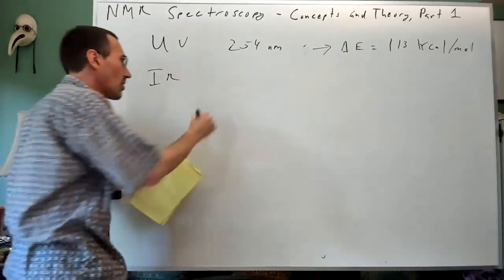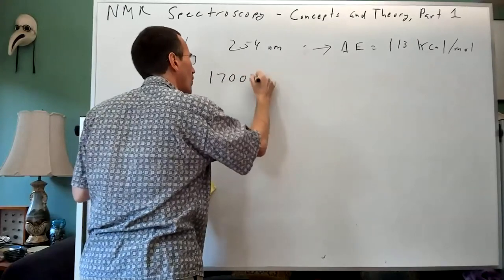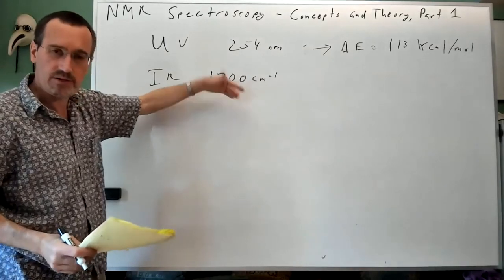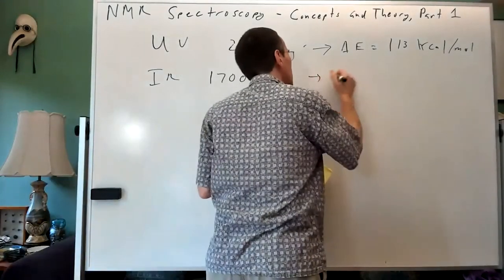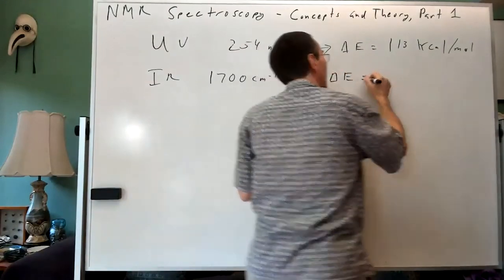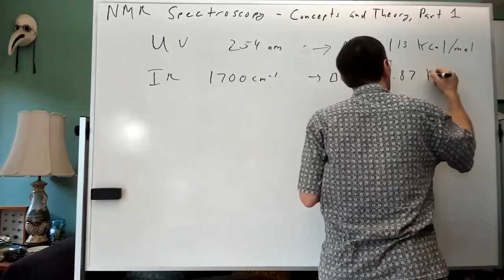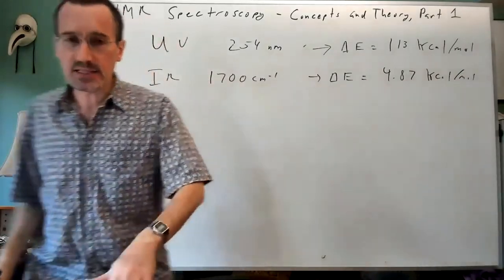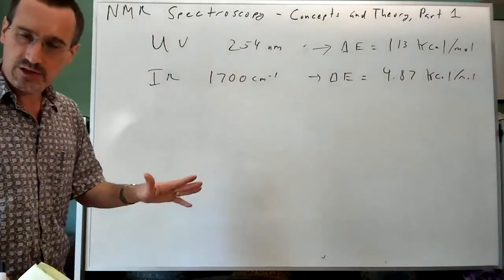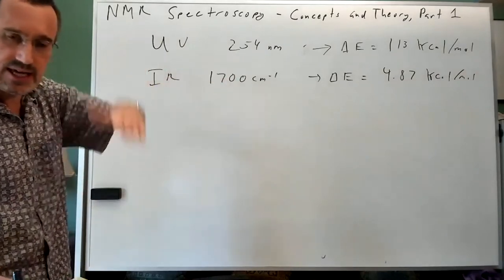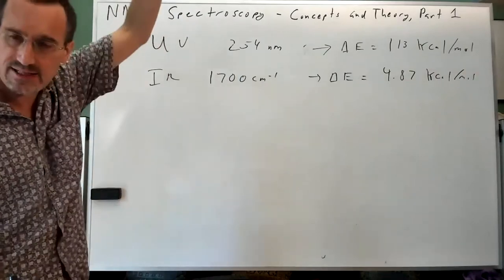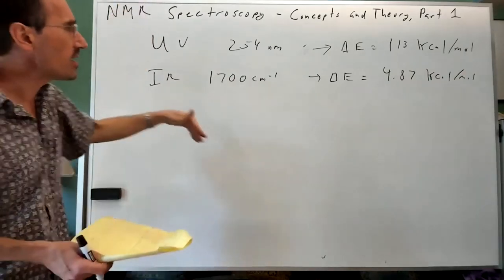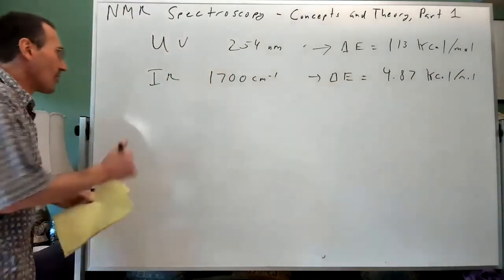IR is a much lower energy technique. For a carbonyl, 1700 wave numbers, reciprocal of wavelength, leads to a delta E of 4.87 kilocalories per mole. That kind of makes sense. If you're exciting between vibrational states, it's way less than the energy to kick from bonded to non-bonded.